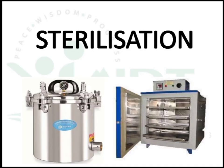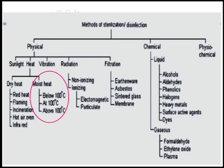In this video, we will discuss different sterilization methods. We had already discussed sunlight and dry heat sterilization in the previous video. Here we will discuss the remaining methods, starting with moist heat sterilization. The main difference is that in dry heat sterilization, heat from a flame or heating coil directly contacts the substance, whereas in moist heat sterilization, water vapor at higher temperature is used.